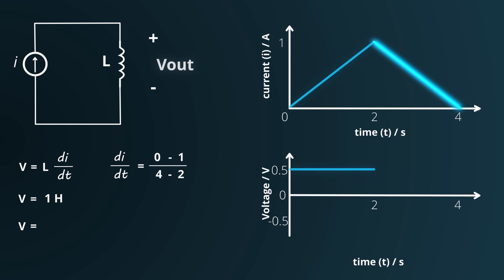Plugging the values into the equation again, we get the voltage across the inductor during this time frame as minus 0.5 volts.